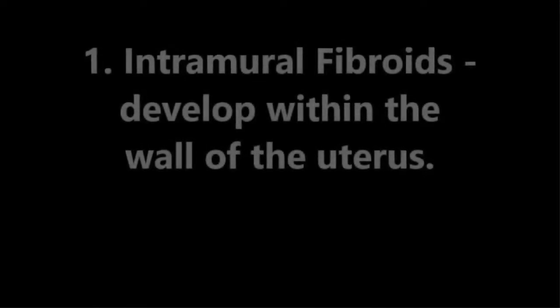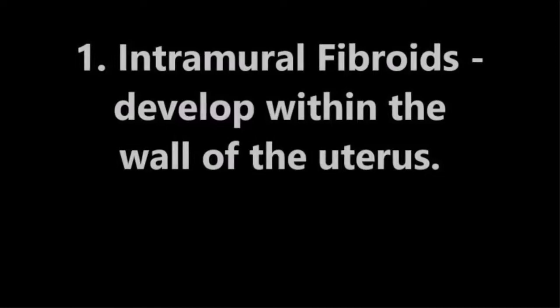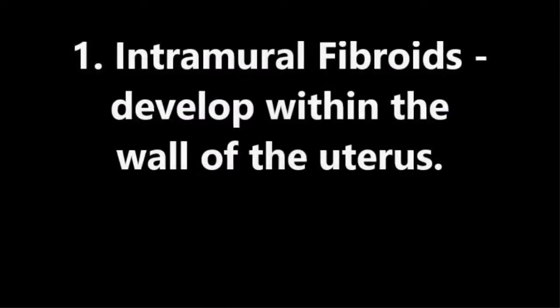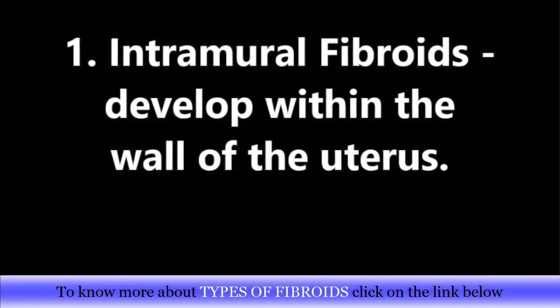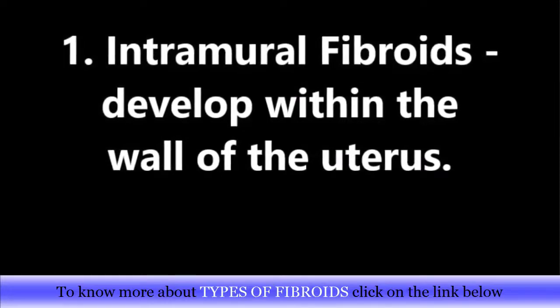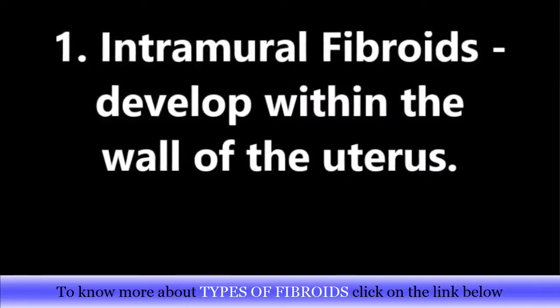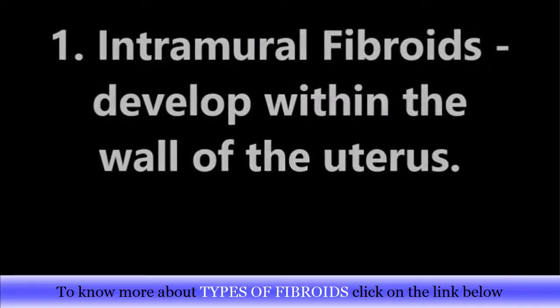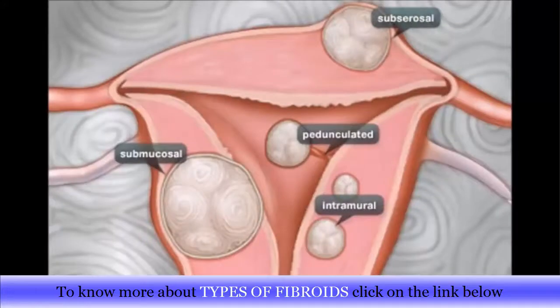First up is intramural fibroids. These fibroids develop within the wall of the uterus. They are actually the most common type of fibroids that affect women. These fibroids can grow so large that they actually distort the size of the uterus. Particular symptoms include pain and pressure in the pelvic region, and also prolonged and heavy periods. From the diagram, you can see where intramural fibroids are usually located.